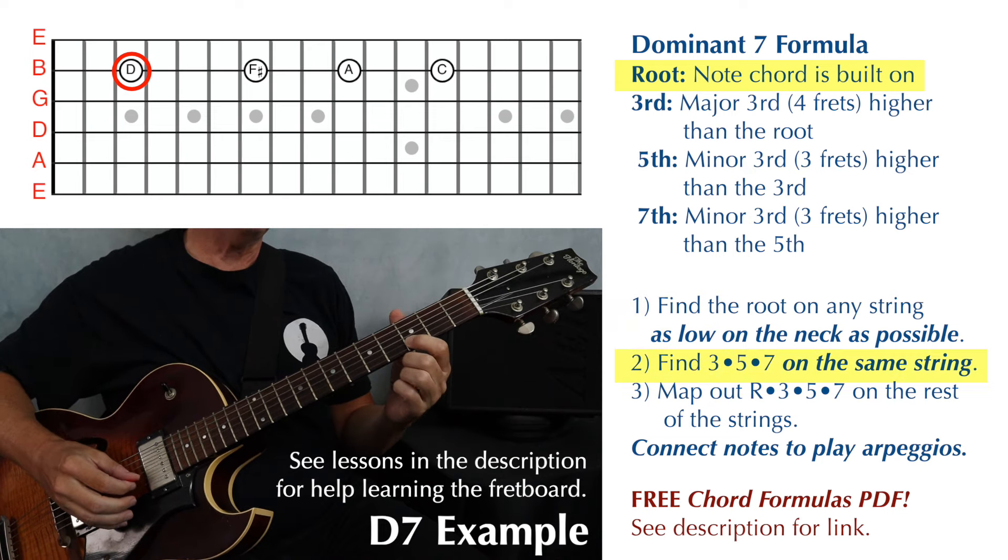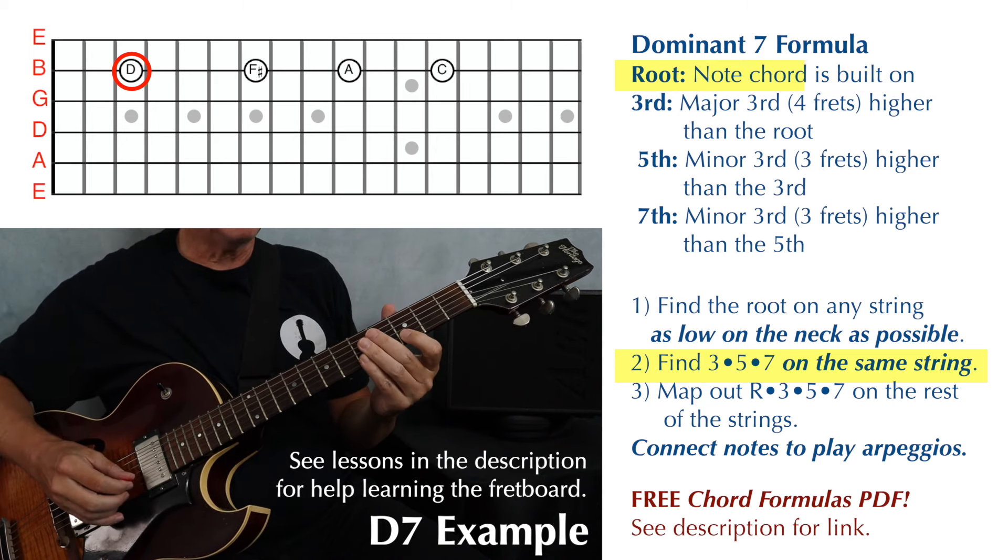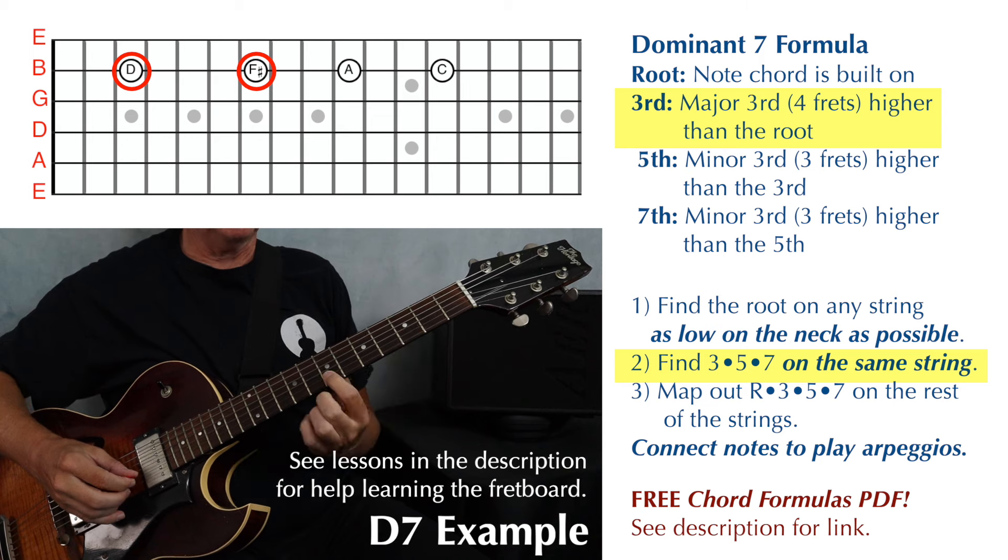Step two is to find the third, fifth, and seventh of the chord on the same string. For a dominant seven chord, the third will be a major third higher than the root, which is four frets higher.